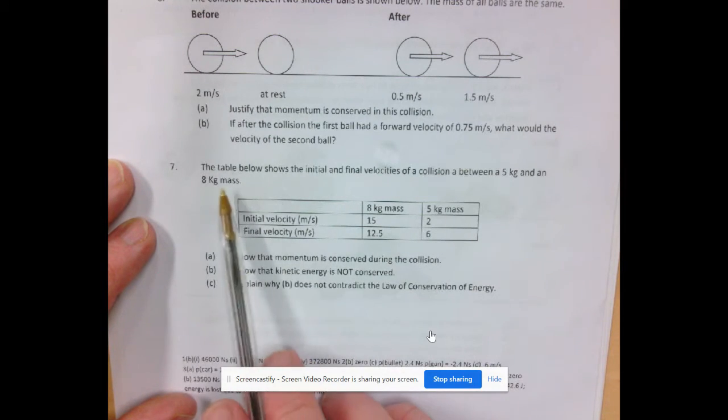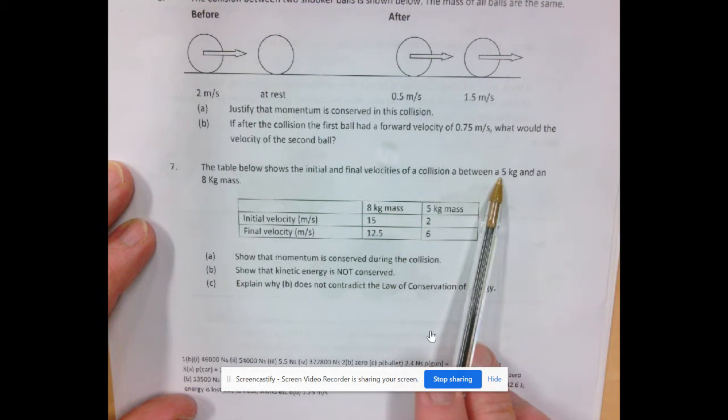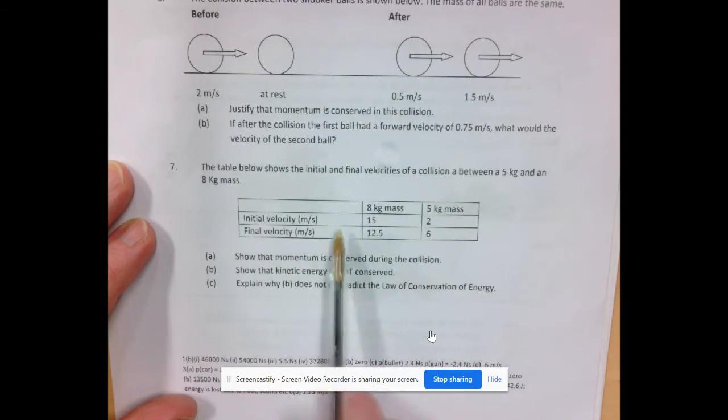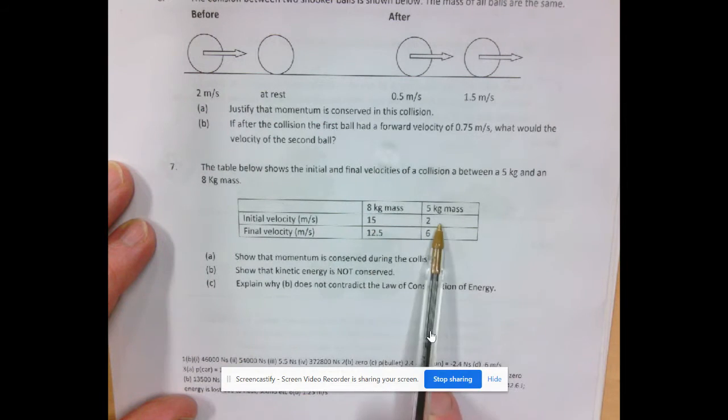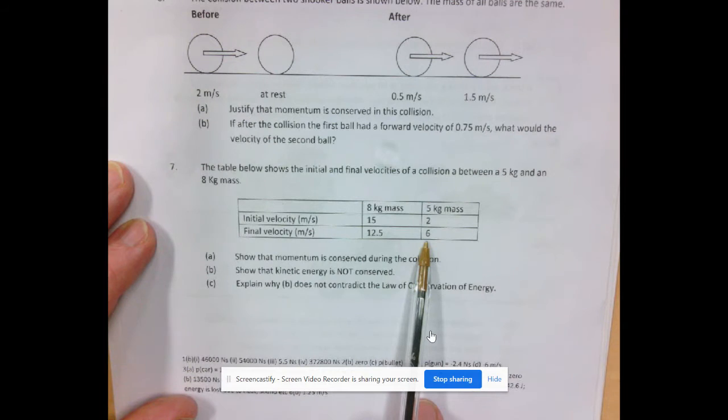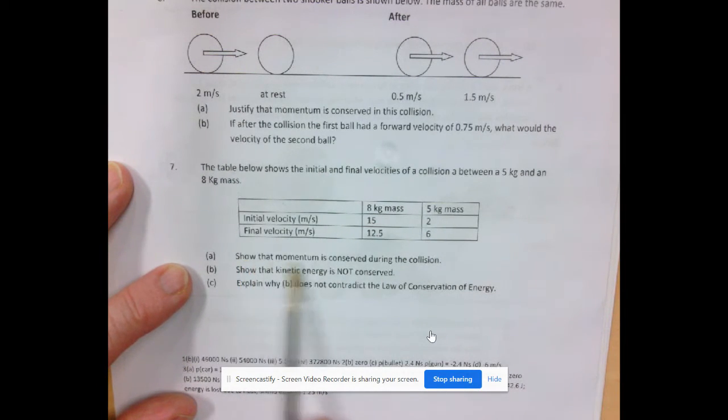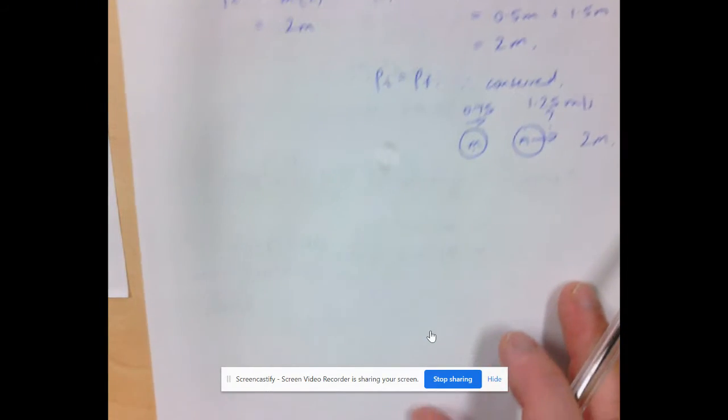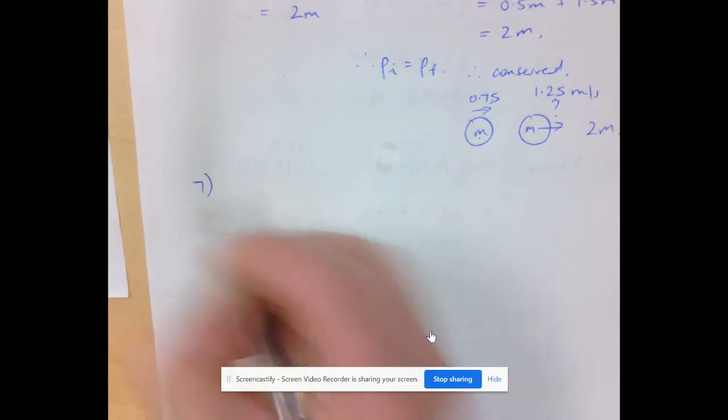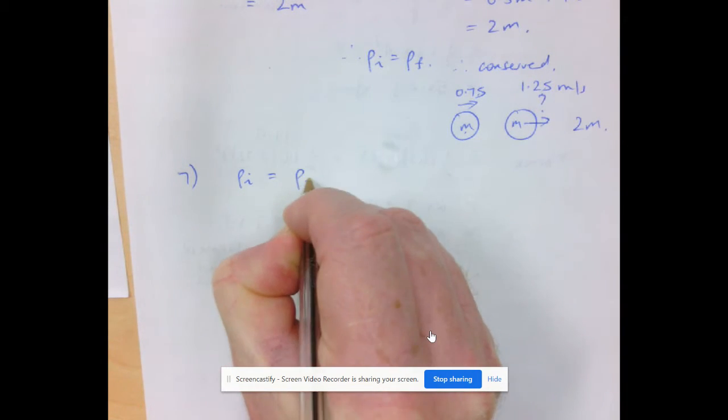Question 7. The table below shows the initial and final velocities of a collision between a 5kg and an 8kg mass. The initial velocities are 15 and 2, and the final are 12.5 and 6. We are assuming that positive numbers means they're moving to the right. To show momentum is conserved, we are going to prove that momentum initial is equal to momentum final.